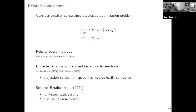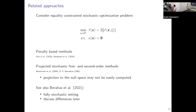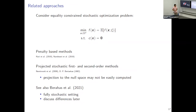We are not the first to consider stochastic optimization with constraints. Typical approaches in the neural network world are penalty-based methods: you take the constraint, put it as a Lagrange-type term in the objective, and crank up the penalty parameter so that as it goes to infinity you reach a feasible solution. But convergence can be quite slow. An alternative is projected methods, though for general nonlinear constraints it may be difficult to project onto the null space. The most closely related work is from Berahas, Curtis, and collaborators at Lehigh, who consider a fully stochastic setting.